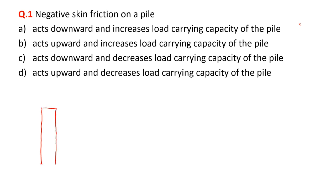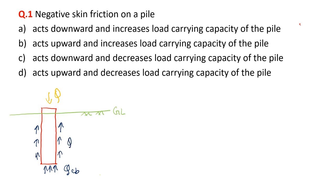Let me draw a pile first. Suppose this is our pile which is subjected to load Q. This load is coming from the superstructure, and we can also show the ground level. To take care of this load coming from the top, there are two things responsible: one is called end bearing, so at the bottom a reaction is developed which we call Q_eb, and the other is skin friction.